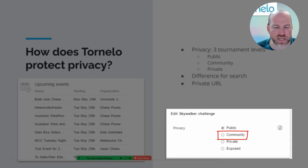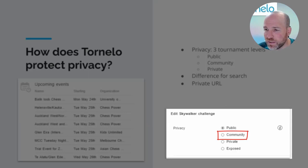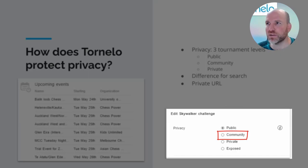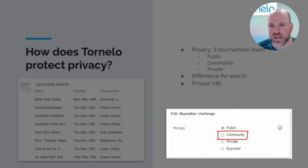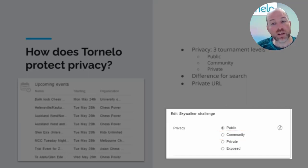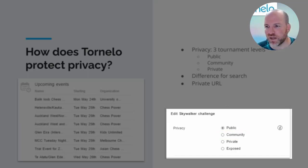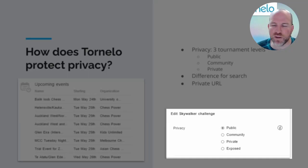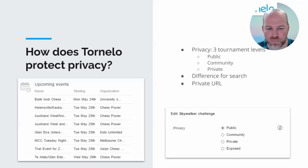You can take the URL — the link to your chess tournament — and share it on your website or send it in an email, and people will be able to follow it and see your tournament. What the community setting does is stop people from searching and finding your tournament; it doesn't stop people from navigating directly to it. If you give them the address, they can go there — they just can't look you up in a directory to find the address.